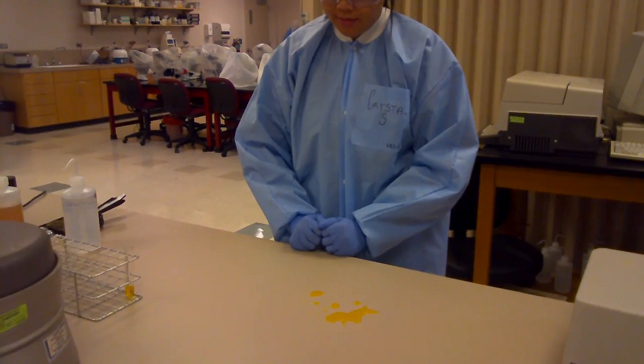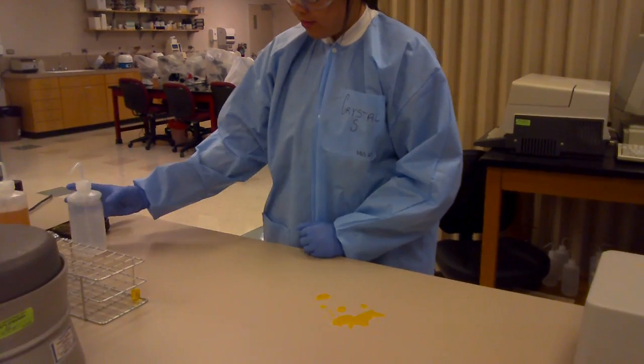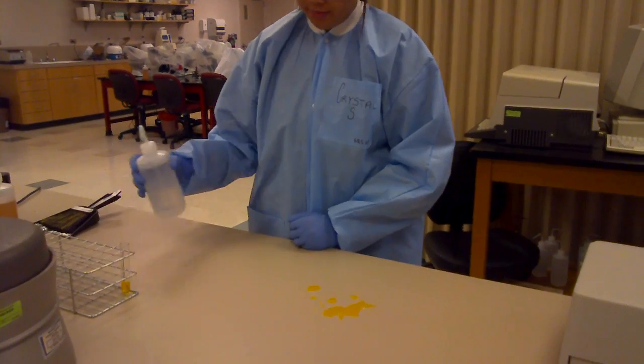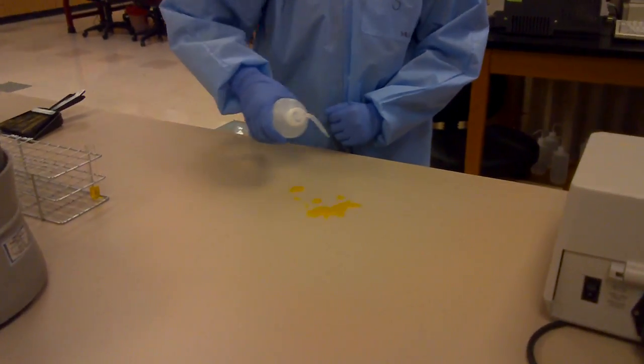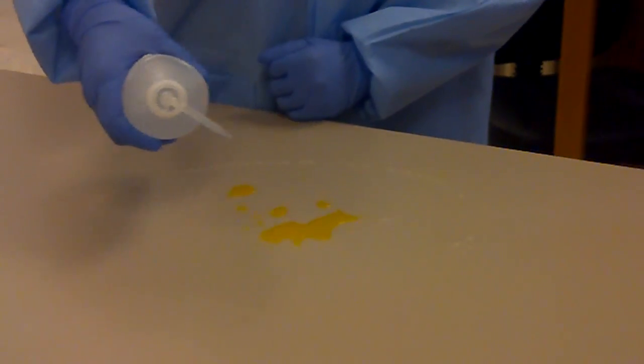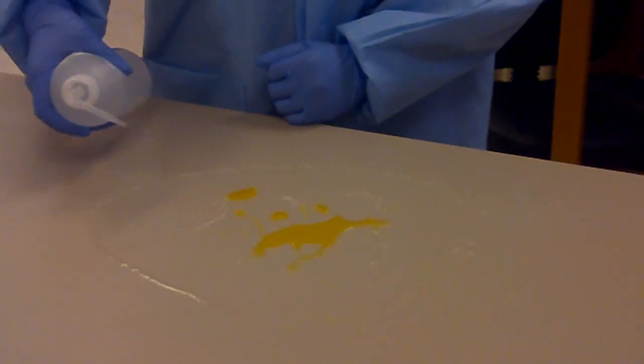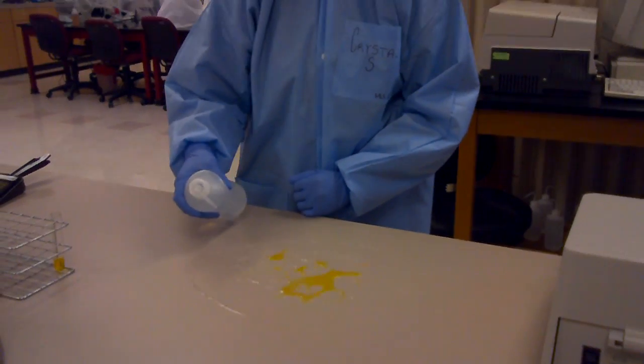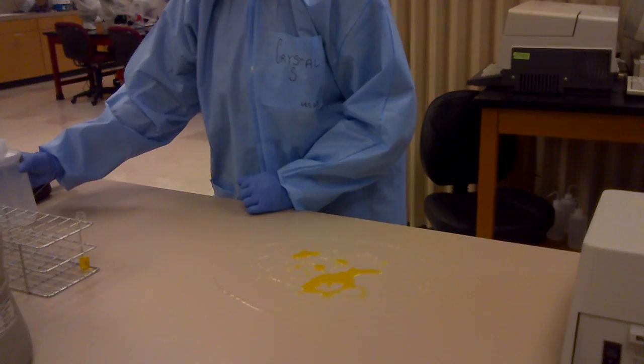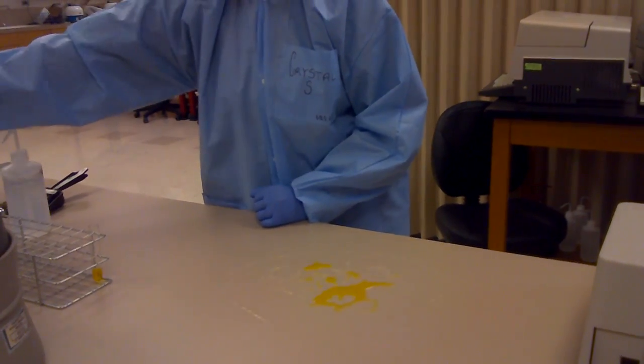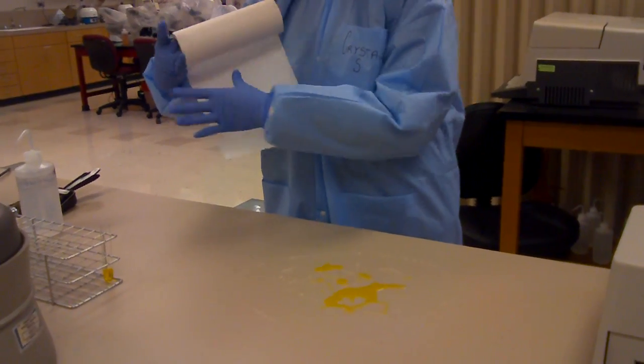Use 1 to 10 diluted sodium hypochlorite solution to cover the spill. Then cover the spill with paper towels until the spill is completely absorbed.